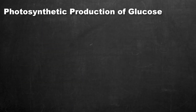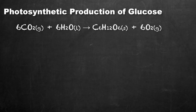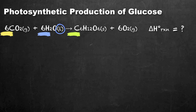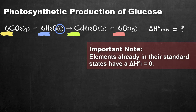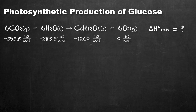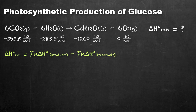For our example, we're going to look at the photosynthetic production of glucose and determine the overall enthalpy change using the standard enthalpies of formation for the compounds involved. On the reactant side, we have six moles of carbon dioxide reacting with six moles of liquid water. It is important to note the states because the states of these compounds lead to different enthalpies of formation. On the product side, we have one mole of glucose and six moles of oxygen gas. Oxygen gas is already in its standard state, so its enthalpy of formation is zero. The heats of formation for the other compounds will be provided.